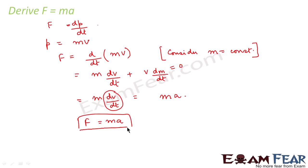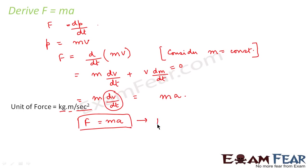So now we are clear on Newton's second law. The first statement is: force is the rate of change of momentum. The second statement is: force is the product of mass and acceleration. The unit of force is kg·m/s², which follows from mass in kg and acceleration in m/s². The SI unit of force commonly used is Newton.